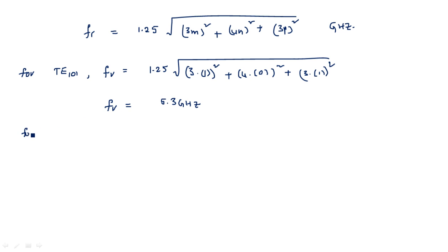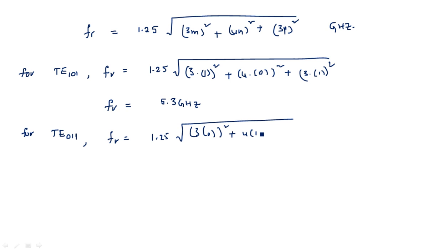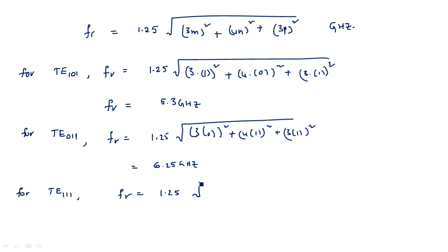For mode TE011 (m=0, n=1, p=1): fr = 1.25 × √[(3×0)² + (4×1)² + (3×1)²] = 1.25 × √[0+16+9], giving fr = 6.25 gigahertz. For TE111 (m=1, n=1, p=1): fr = 1.25 × √[(3×1)² + (4×1)² + (3×1)²] = 1.25 × √[9+16+9], giving fr = 7.28 gigahertz.